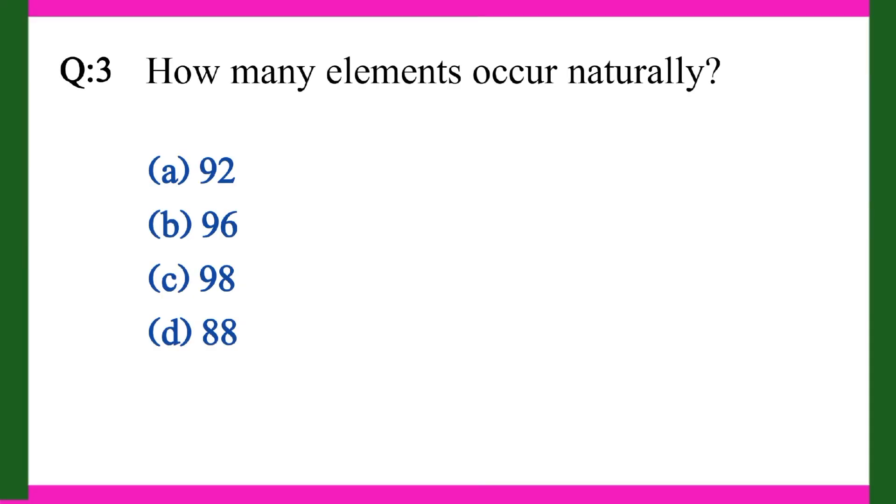Question three: How many elements occur naturally? A. 92, B. 96, C. 98, D. 88. Right answer is A. 92.